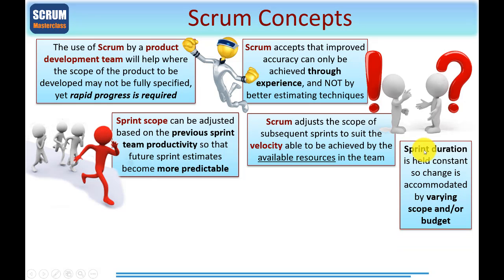Sprints, also known generally as time boxes, have a constant duration, so that any change needed during them is accommodated by varying scope and or the budget. If you've come from a traditional project management environment, you'll know about the six performance criteria — time, cost, scope, benefits and risk. With a traditional project, scope will be held constant and you would vary time and cost. Here it's the reverse, where time is held constant, and you can only adjust the other performance variables from the point in time when the Sprint starts to when it finishes.